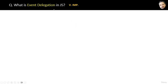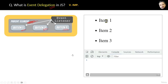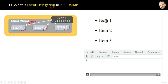What is event delegation in JavaScript? In short, if you handle the event of a parent element, JavaScript will automatically handle the events of its child elements. The parent is delegating something to the child. Suppose you have a web application with a parent list containing three child elements.